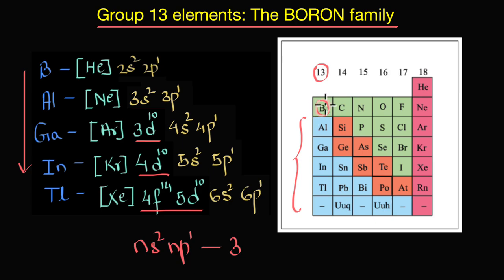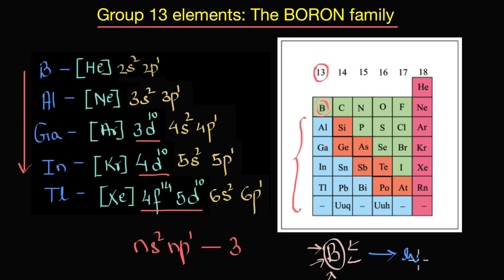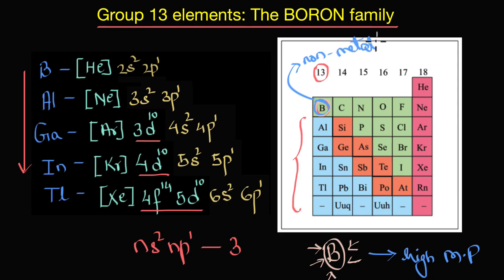Boron does exhibit some properties similar to metals. For example, a sample of boron has a very shiny appearance, just like metals. Boron also has a very strong crystalline structure, giving it a high melting point. Nevertheless, we will study boron as a non-metal.